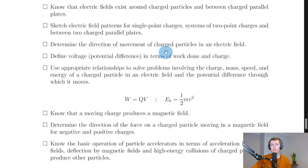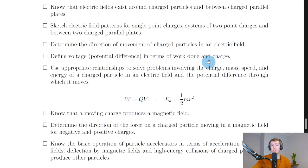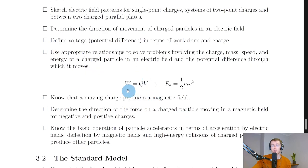You should be able to determine the direction of movement of charged particles in an electric field using the simple rules of attraction or repulsion. You should also be able to define voltage, i.e. potential difference, in terms of work done and charge. Rearranging for V gives work done divided by charge Q — so a work done of one joule will be done on one coulomb of charge when the potential difference is one volt. You should also be able to use W equals QV (work done equals charge times potential difference) and the kinetic energy equation Ek equals a half mv squared, remembering that work done on a charged particle equals the change in kinetic energy — allowing you to calculate things like the speed of a particle.